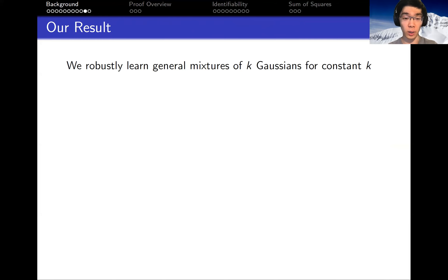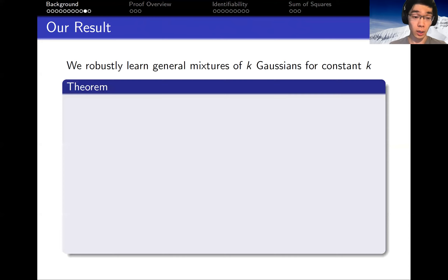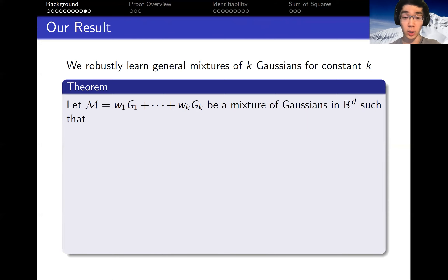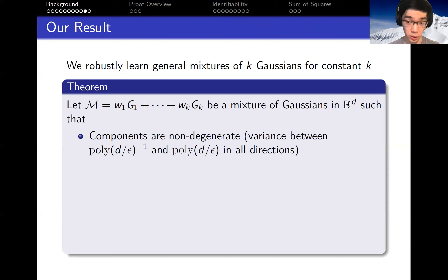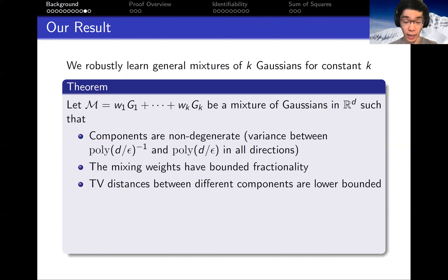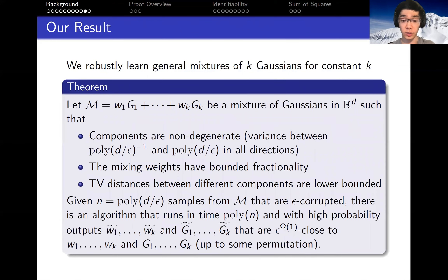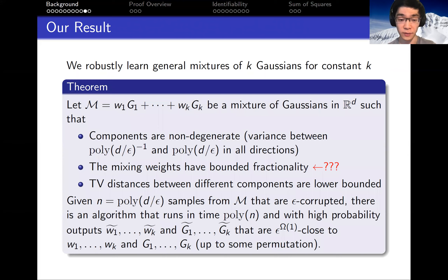Our result is an algorithm that robustly learns a general mixture of k Gaussians for any constant k. More formally, the theorem states: given some unknown mixture of Gaussians in R^d, assuming the components are slightly non-degenerate, the mixing weights have bounded fractionality, and the TV distances between the components are lower bounded — so no two components are too close to each other — then in polynomial time and sample complexity, given an epsilon-corrupted sample, we can learn the parameters of the mixture up to epsilon to the omega(1) accuracy, meaning epsilon to a positive constant. The bounded fractionality assumption comes from a limitation of previous work and should not be too difficult to remove.